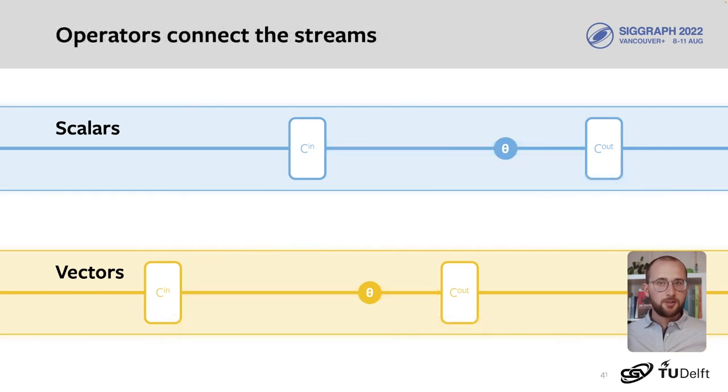Next, computing local features. We connect from the scalar stream to the vector stream with gradient and co-gradient. Back to the scalar stream with divergence, curl, and the vector norm. And finally, we add Laplacians inside the streams.